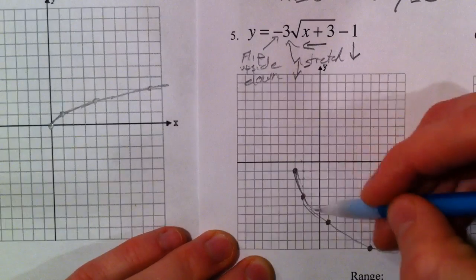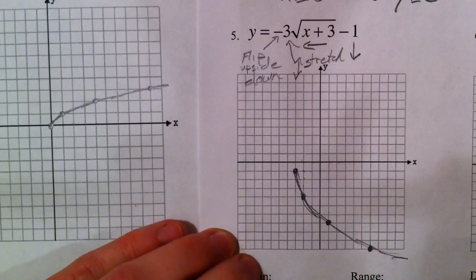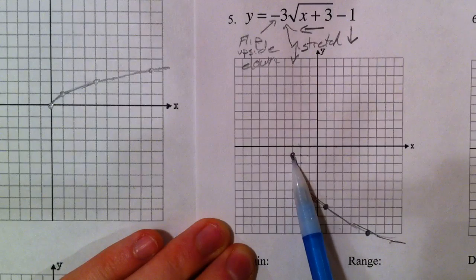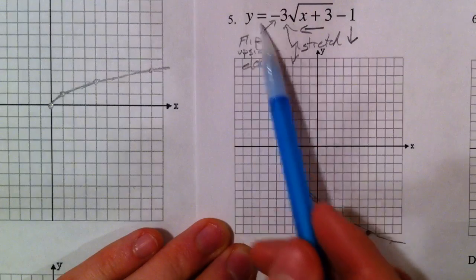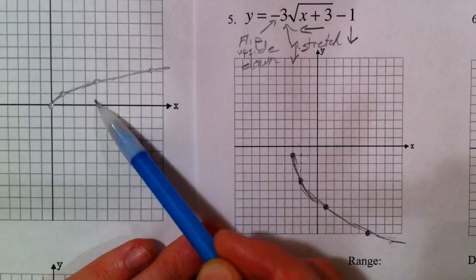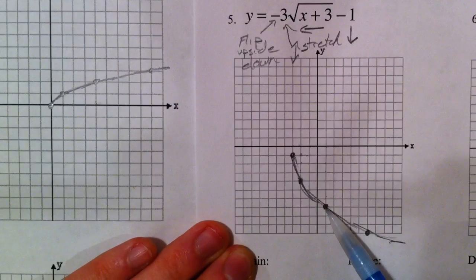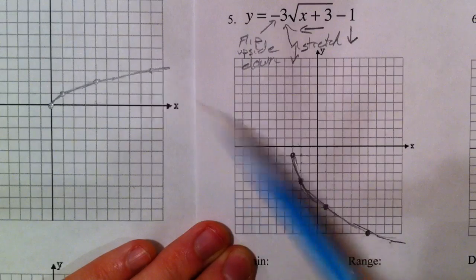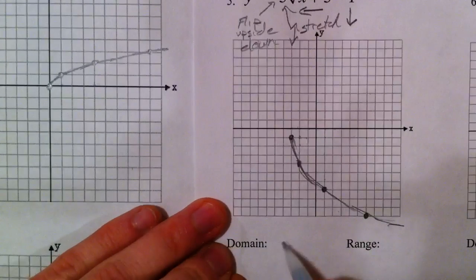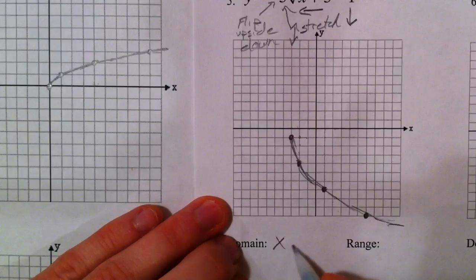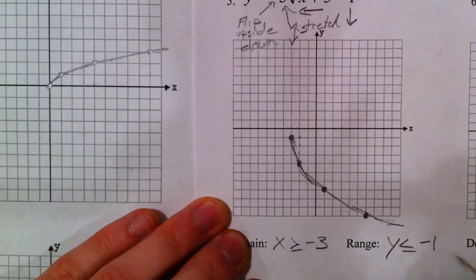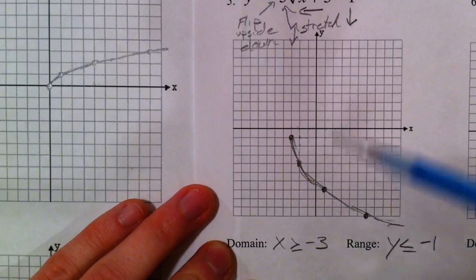The square root ends here — notice a very similar shape but flipped upside down, shifted left three and down one, with every vertical change multiplied by negative three. Square root of one gave one, now it's negative three. Square root of four gave two, now it's negative six. Square root of nine gave three, now it's negative nine. Domain doesn't start until negative three since we shifted left three, so x is greater than or equal to negative three. The range is y is less than or equal to negative one — we've had greater than or equal to before, but now it's less than because we flipped it.